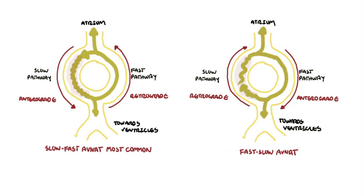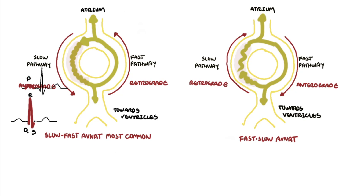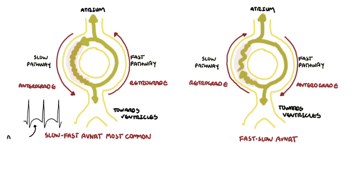Conduction up the fast pathway is very rapid, so retrograde atrial depolarization — represented by the P wave on ECG — is simultaneous or almost simultaneous with anterograde ventricular activation, represented by the QRS on ECG. This causes the low amplitude P wave to be obscured in the much higher amplitude QRS complex. Classic ECG findings are no visible P waves; if there are visible P waves, the PR interval is shortened.